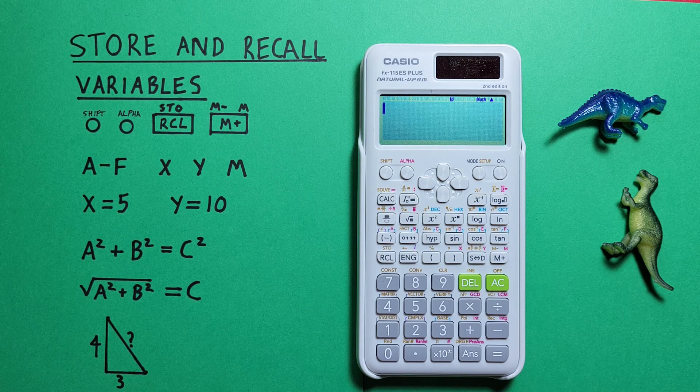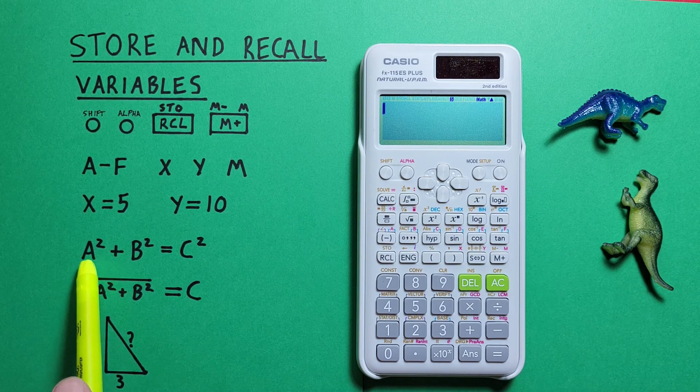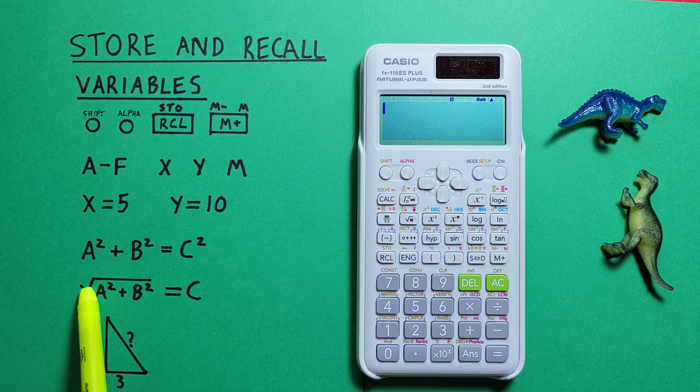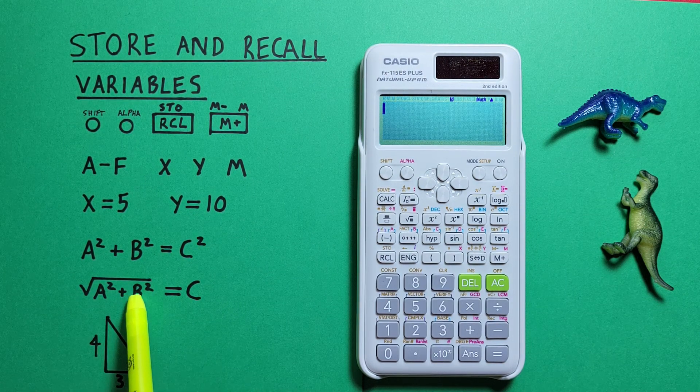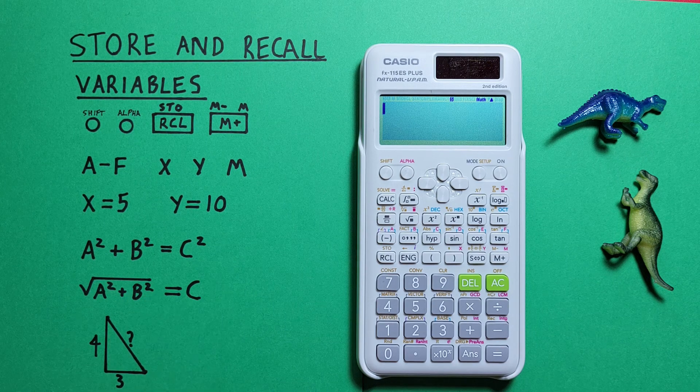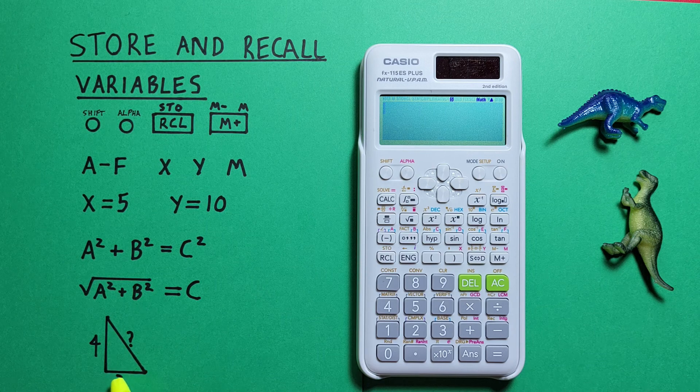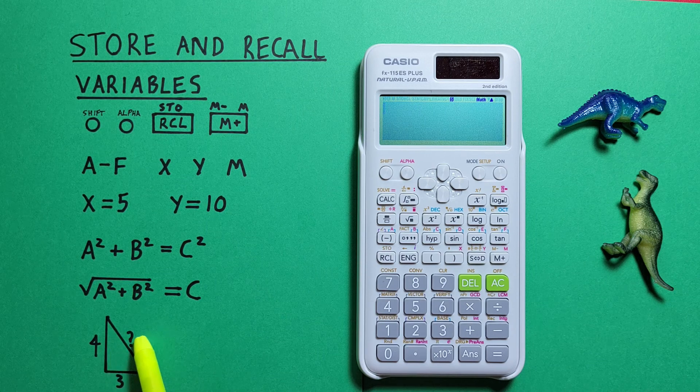Well, we know that a right angle is a squared plus b squared equals c squared and can be rewritten as the square root of a squared plus b squared equals c. So if we call this our a side and this our b side, we can determine this c side.